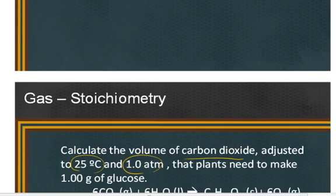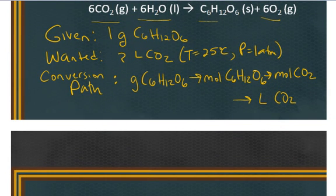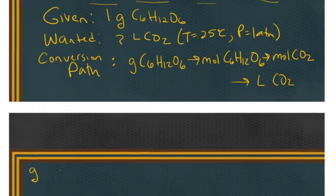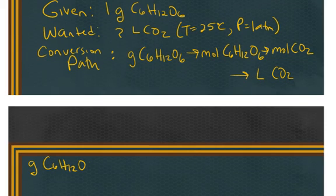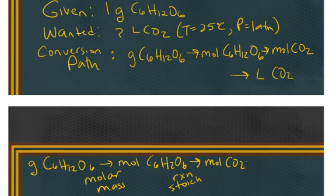How are we going to get there? We need to figure out what our conversion factors are going to be. To convert from grams of glucose to moles of glucose, the conversion factor to get from grams to moles of a particular compound is going to be the molar mass. To get from moles of glucose to moles of carbon dioxide, you're going to need to use the reaction stoichiometry, which is the molar ratio.